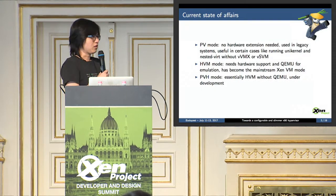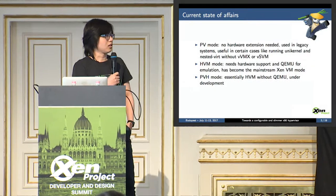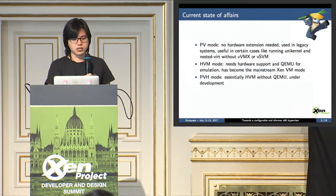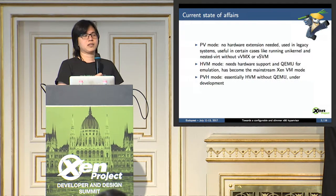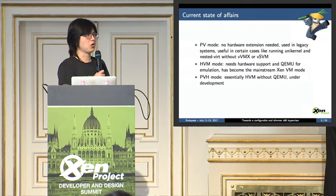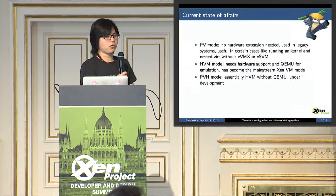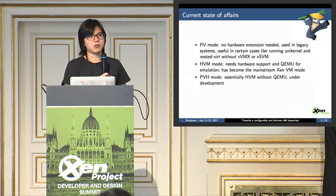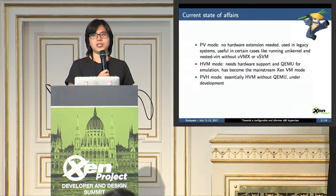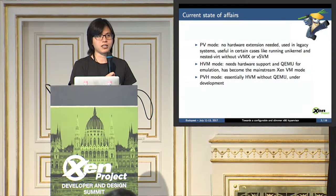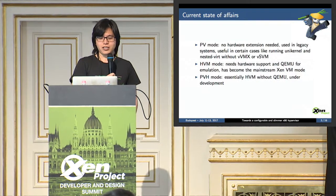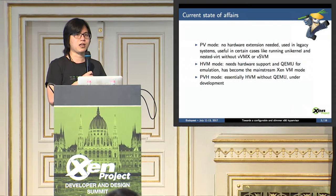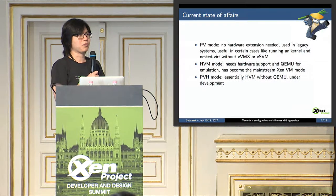As far as the x86 Xen is concerned, there are three major virtualization modes. The first one is the PV mode. This mode is the oldest of all three. It came from an era in which the hardware virtualization extension didn't exist. This mode has given Xen a head start in the cloud computing era, and it was rather important.